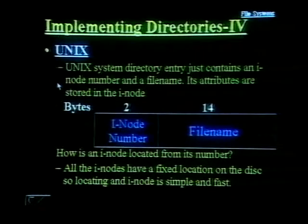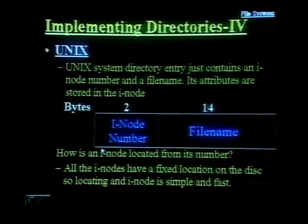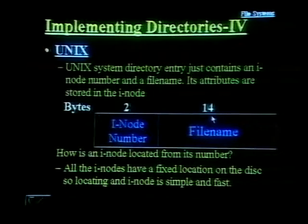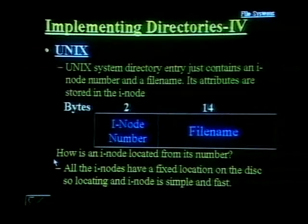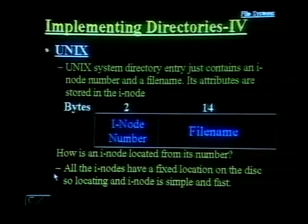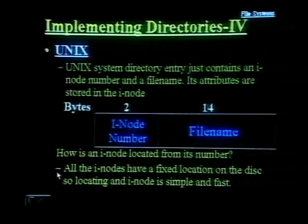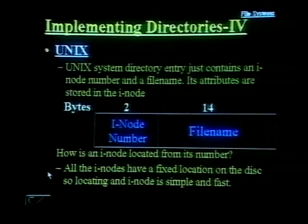The UNIX system directory entry contains just an inode number (2 bytes) and a file name (14 bytes). The attributes of the files are stored in the inode. Since all inodes have a fixed location on the disk, locating an inode from its number is simple and very fast.